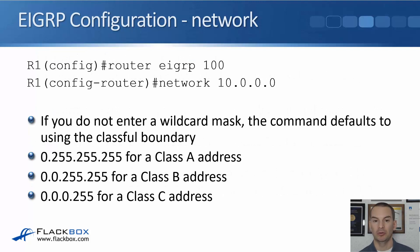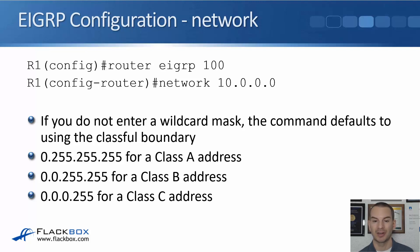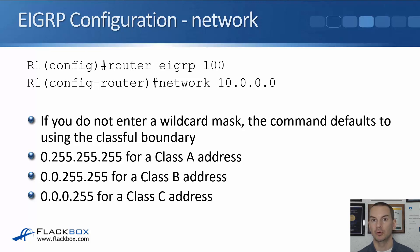If you don't enter a wildcard mask — for example, if you put 'network 10.0.0.0' without a wildcard mask — the command defaults to using the classful boundary. That would be 0.255.255.255 for a class A address, 0.0.255.255 for class B, and 0.0.0.255 for a class C address — just the inverse of the standard subnet mask for each classful network.